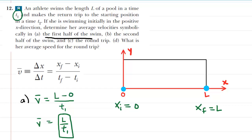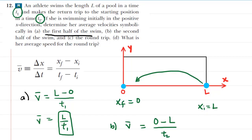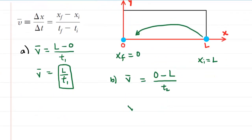In part B, she turns around and swims back to where she started, so our position labels change. We call her initial position L and her final position 0. The average velocity is calculated as: final position 0, minus initial position L, divided by the time interval T2. Simplifying the numerator gives us negative L over T2, which is the correct answer to part B.